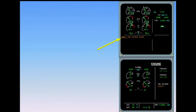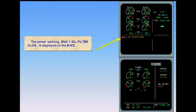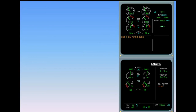The amber warning 'engine one oil filter clog' is displayed on the engine warning display. The ECAM engine page is automatically displayed, showing the white oil filter indication and the corresponding amber clog. Note that this is a level one failure — the master caution does not illuminate nor does the single chime sound.